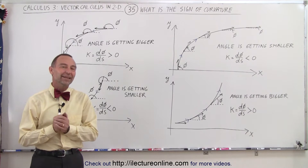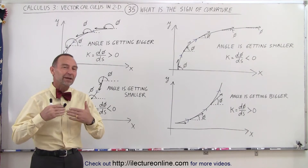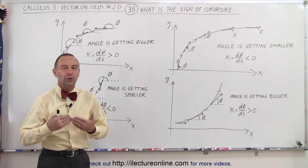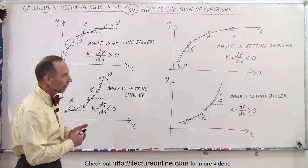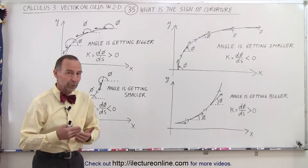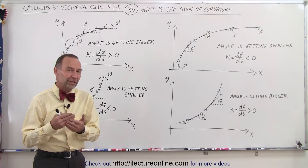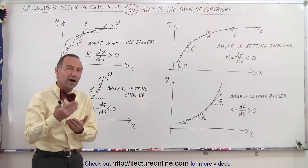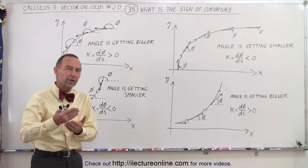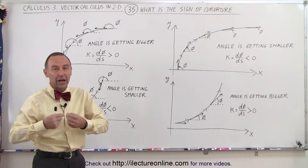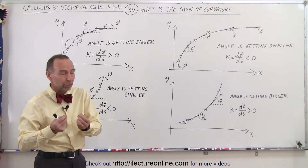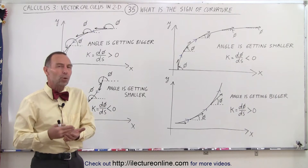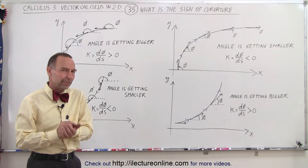Welcome to ElectronLine. Now let's talk about the sign of the curvature of a curve. The curvature of a curve can either be zero if it's a straight line, or it could be positive, or it could be negative. So how do we determine whether or not the curvature is a positive quantity or a negative quantity?